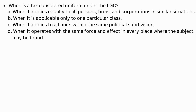Number 5. When is a tax considered uniform under the Local Government Code? a. When it applies equally to all persons, firms, and corporations in similar situations. b. When it is applicable only to one particular class. c. When it applies to all units within the same political subdivision. d. When it operates with the same force and effect in every place where the subject may be found.